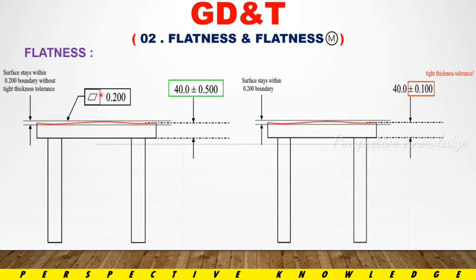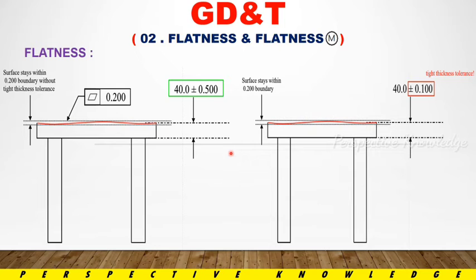The flatness symbol has a tolerance value — for example, 0.2. If a surface has a specification of 0.5, and we measure a value of 0.2, that is within the specification. Another example: if the specification is 0.1 but the measured value is 0.2, and elsewhere the value is 0.5, this relates to the tight thickness tolerance.